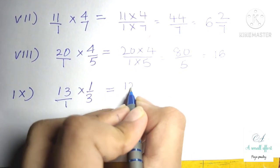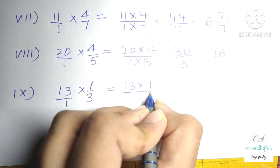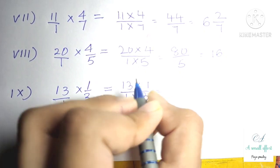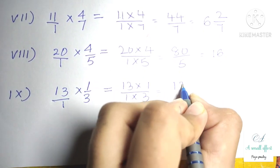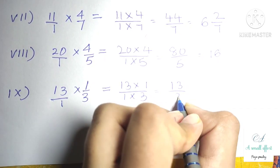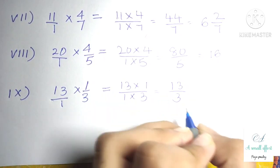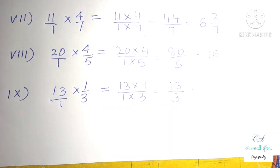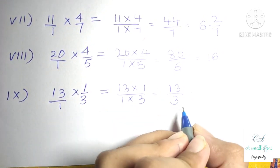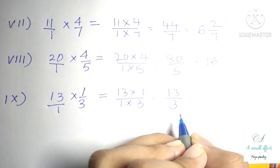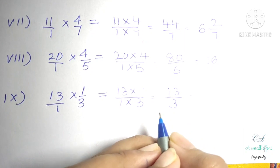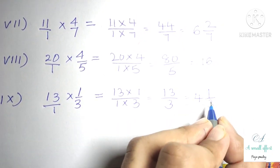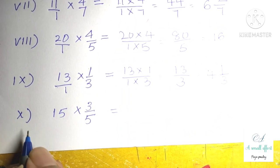Question number 3 part 9 is 13 into 1 by 3. We can write 13 as 13 by 1, multiply numerator with numerator and denominator with denominator: 13 into 1 is 13 by 3. It doesn't reduce to lowest form, so we convert to mixed fraction. The answer is 4 whole 1 by 3.